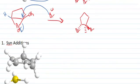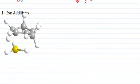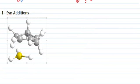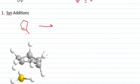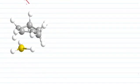For syn additions, like hydroboration, let's take the same compound, our methyl, 1-methyl cyclopentene, treat it with BH3 and THF.